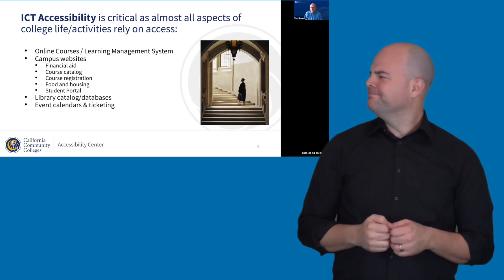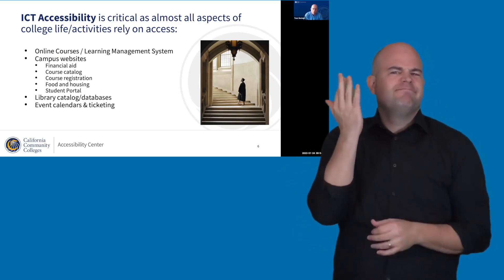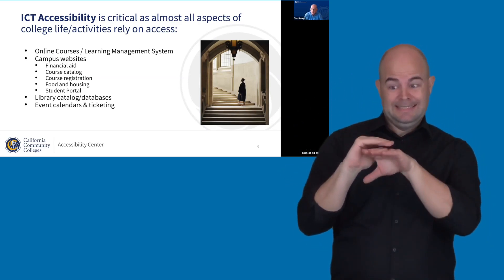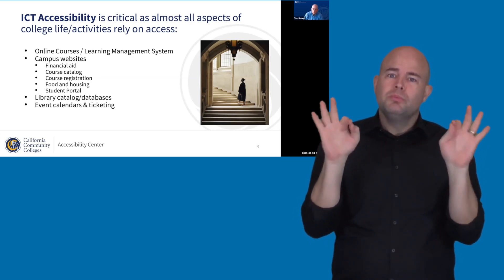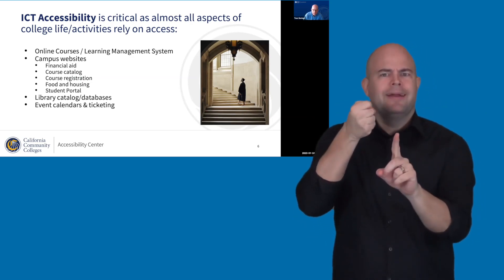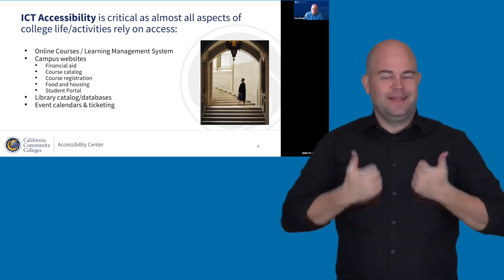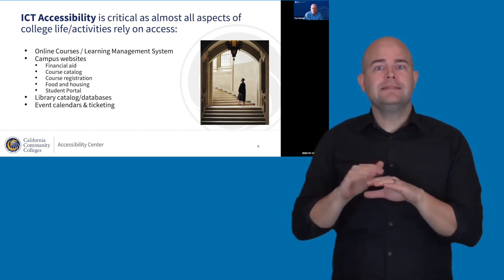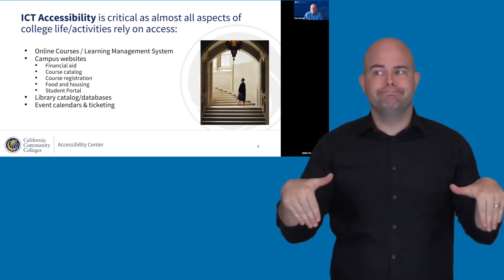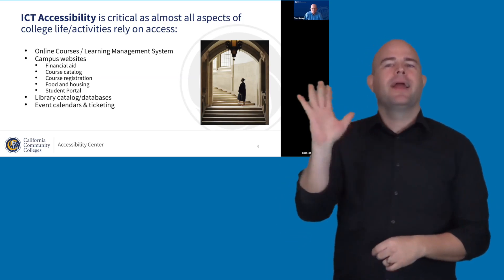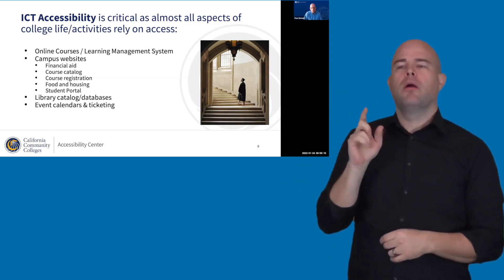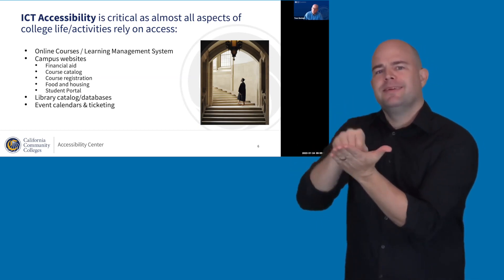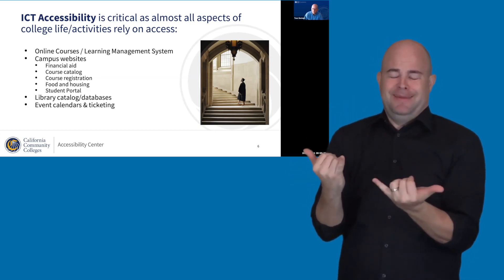So why is this really important? ICT accessibility is critical because it impacts pretty much every aspect of college life and activities. If you don't have access, you pretty much can't participate. It's not like the old days where you needed to go to an office on campus and fill out a paper form — pretty much everything is moving online, if it hasn't already.